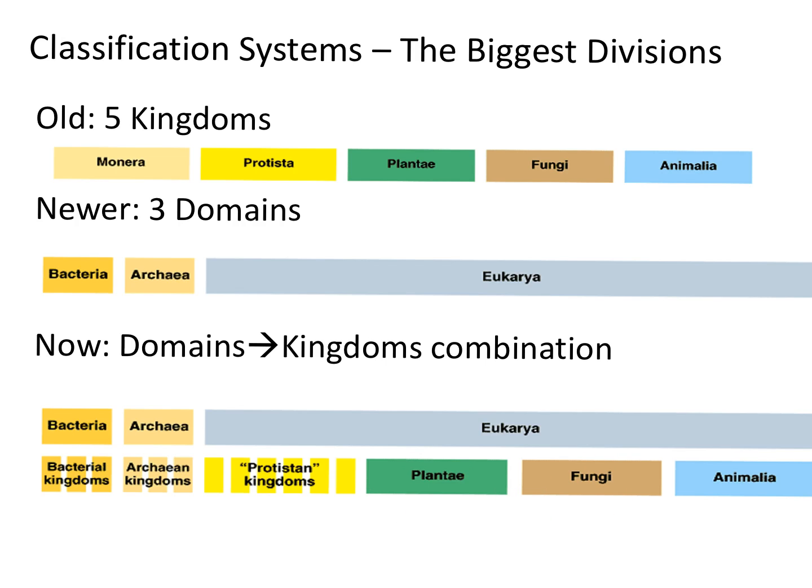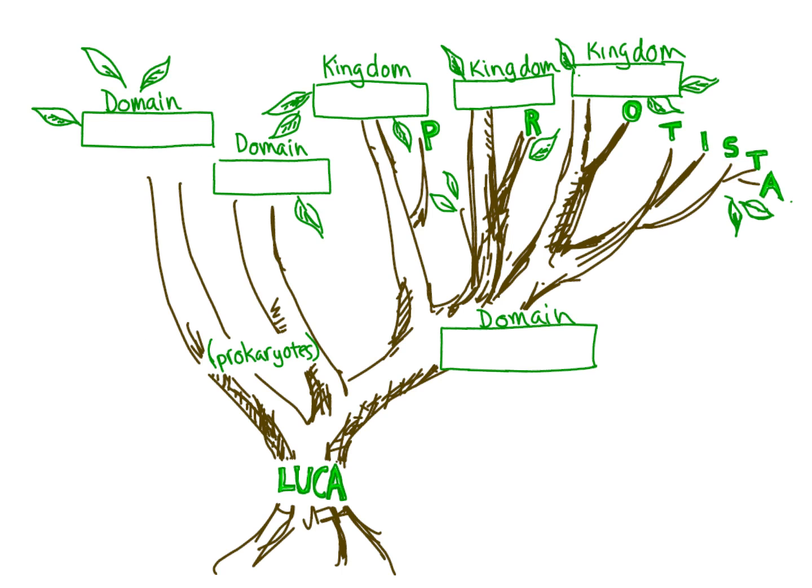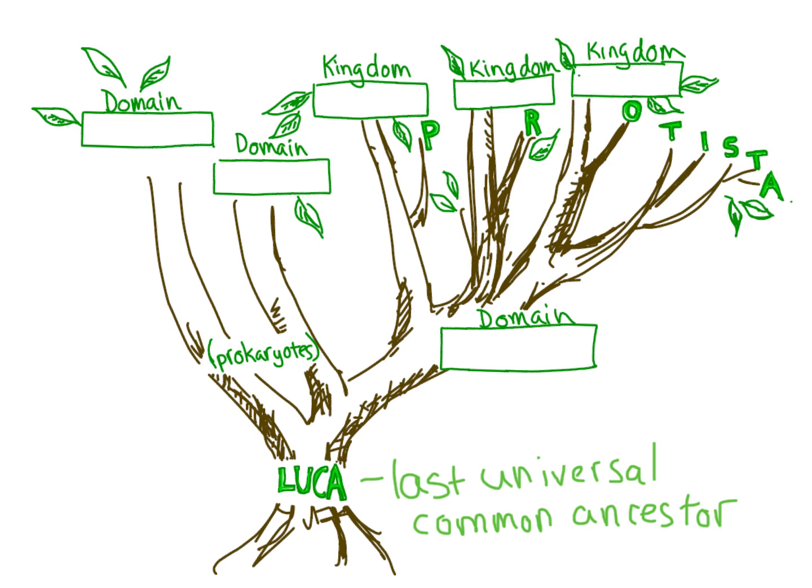Since Darwin's theory of evolution, we have learned that all organisms evolved from a common ancestor, called the last universal common ancestor, or LUCA.